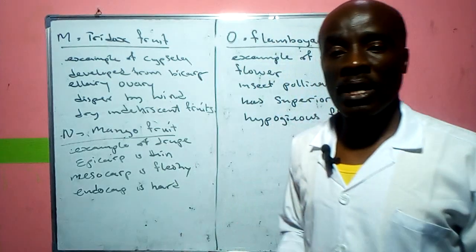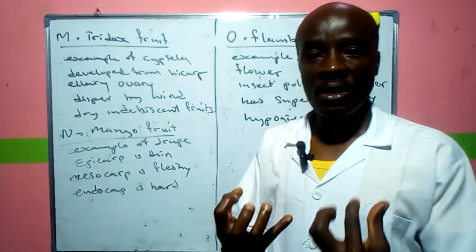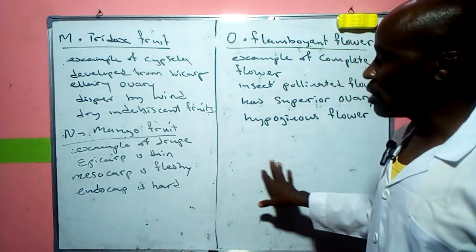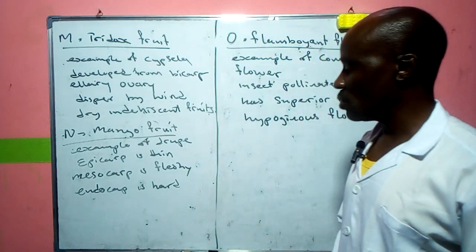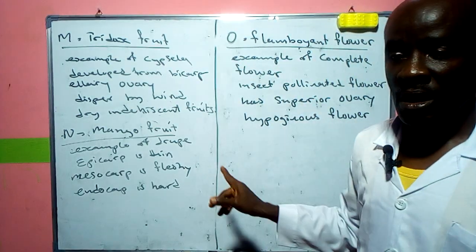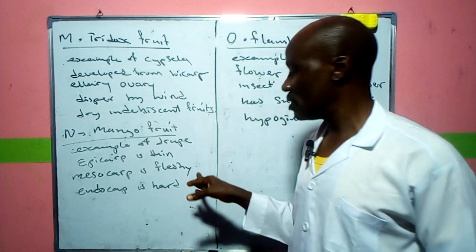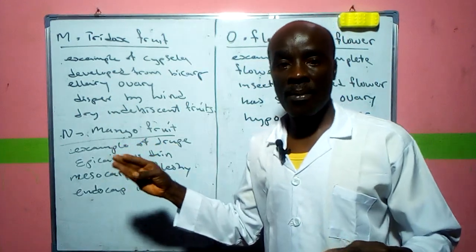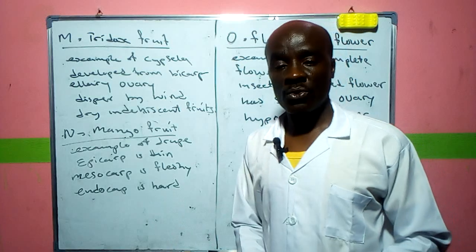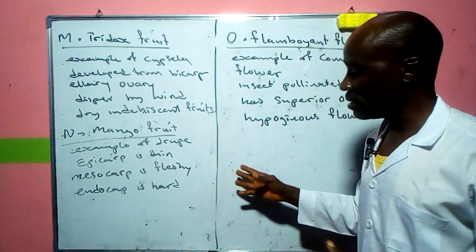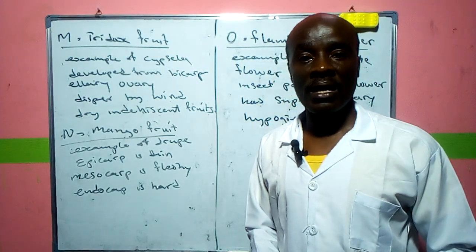These cypsela fruits are dry and indehiscent, meaning the fruit is very dry and cannot be easily cracked open. The mango fruit is also an example of a drupe. The epicarp is thin, the mesocarp is fleshy, and the endocarp is hard. The difference between mango and palm fruit, both drupes, is that the palm mesocarp is fibrous while the mango mesocarp is fleshy.